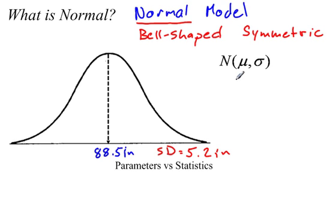And the way we would write the notation for this Wookiee data would be N, and then in parentheses, we have mu, which is the population mean, 88.5, comma sigma, which is the population standard deviation, 5.2.